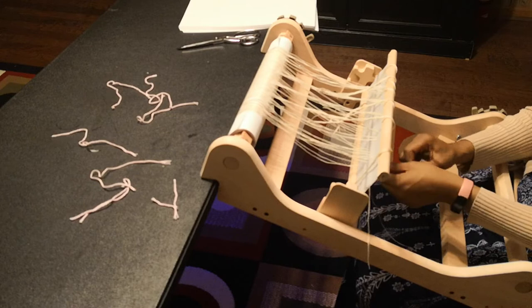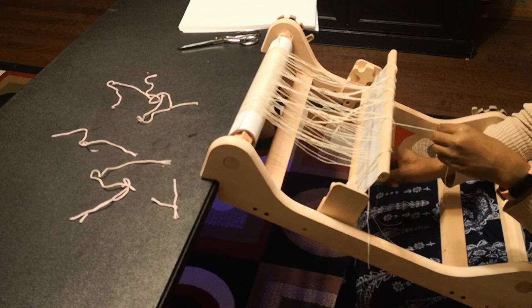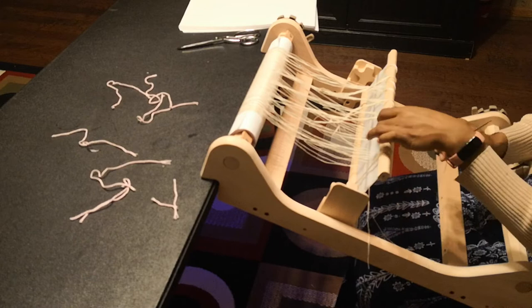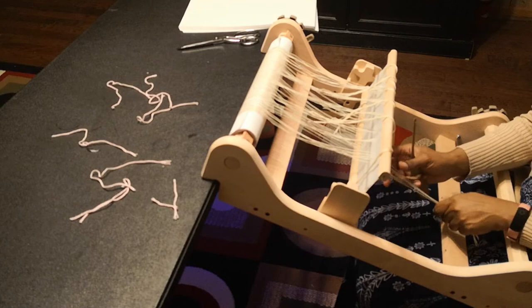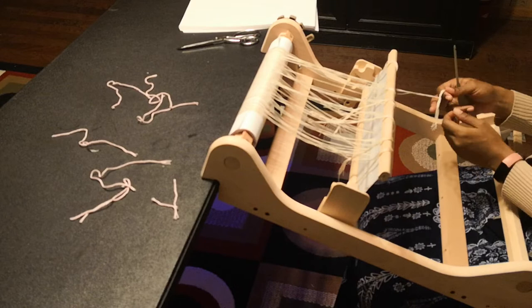I wound my warp onto my back beam and separated the threads using - I am on a 16 inch loom and I'm using legal paper to separate the threads. After I cut my threads, I separated my threads into bundles, and right now I'm going back and forth across the warp threading my heddle.